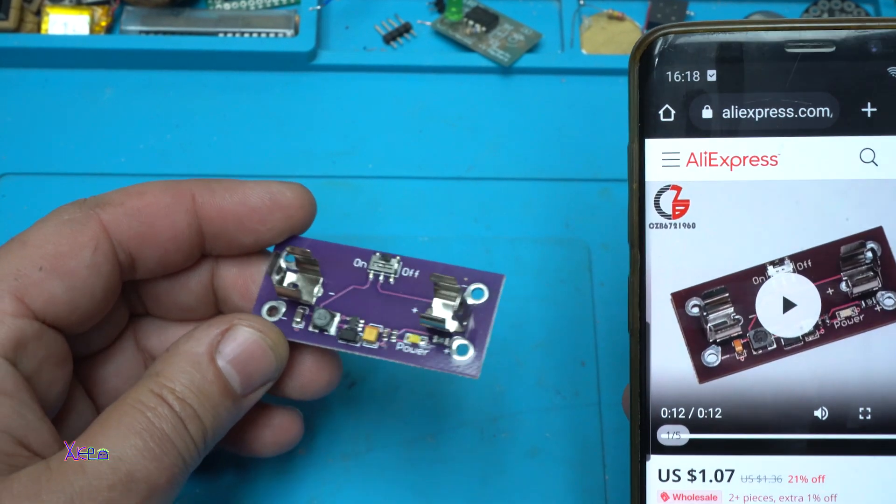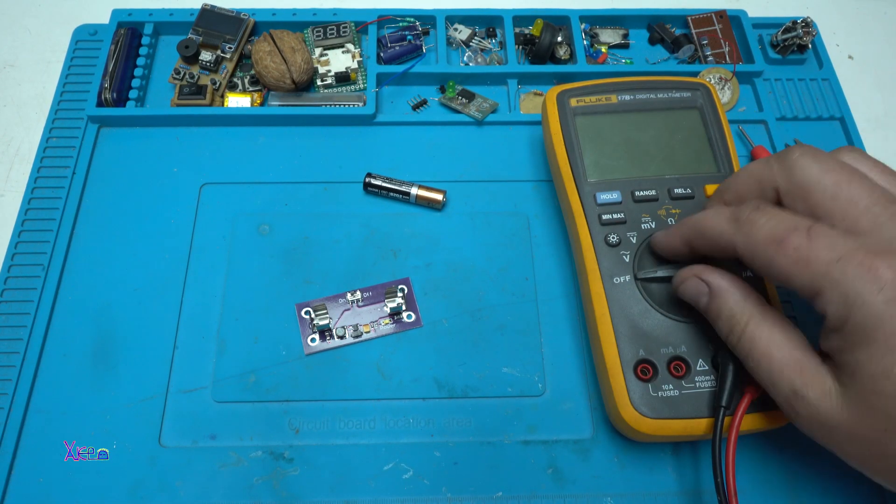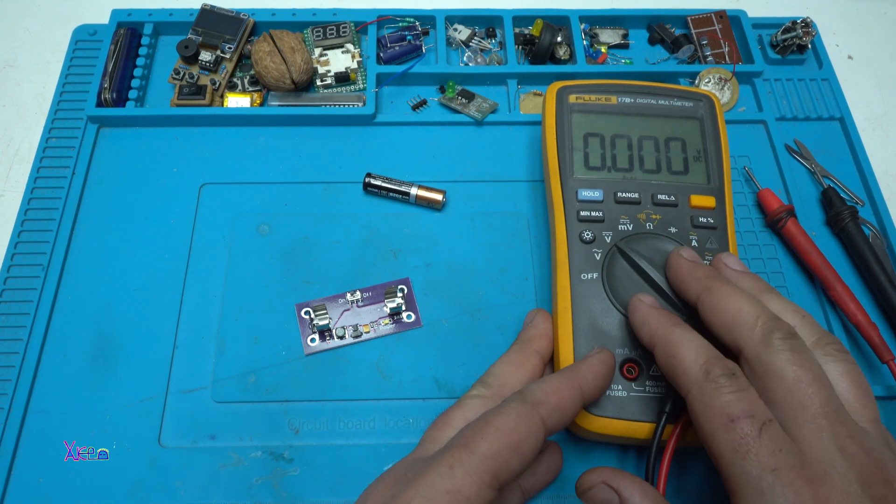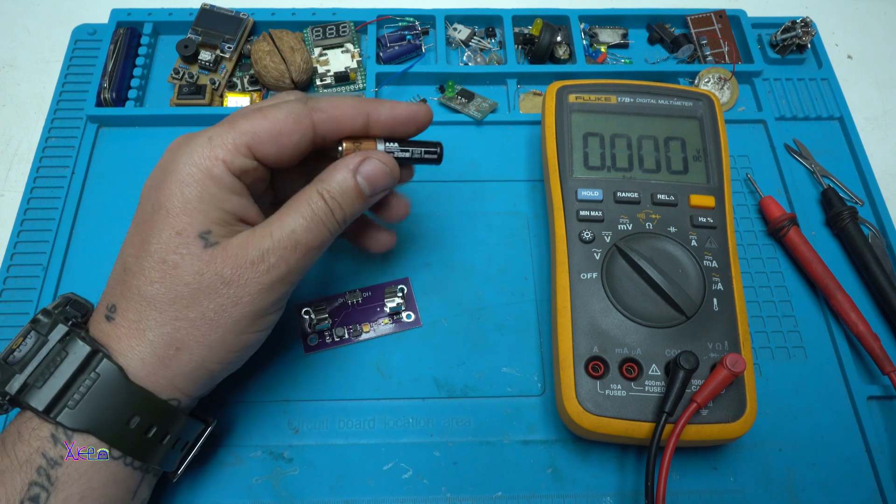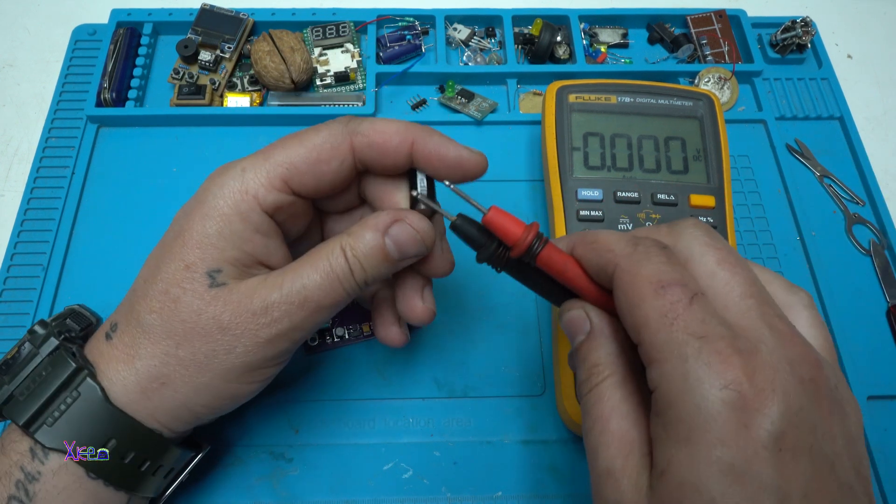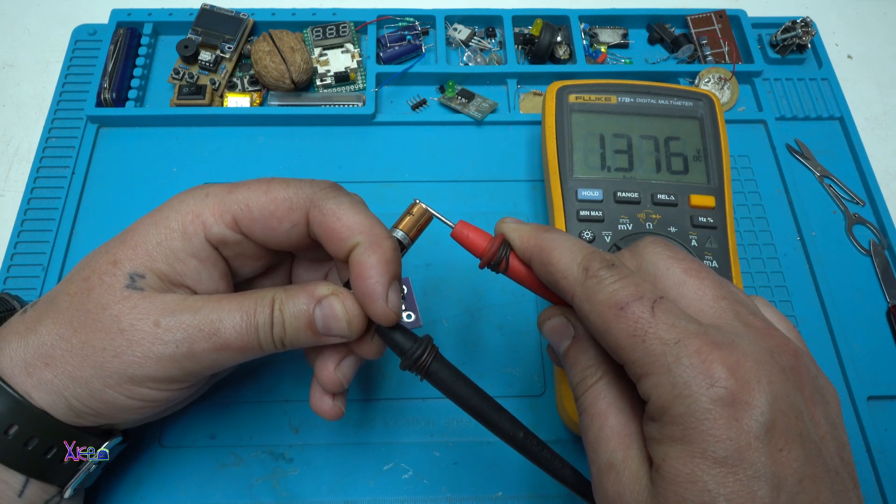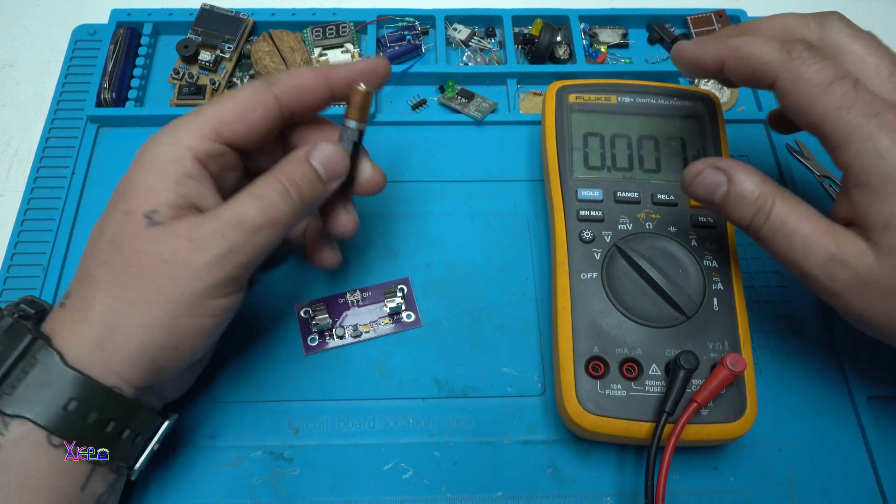Here I have a digital multimeter. I have a AAA 1.5 volt battery. Let's check it. It's 1.37 volts. It's not completely full, but it will do the job.